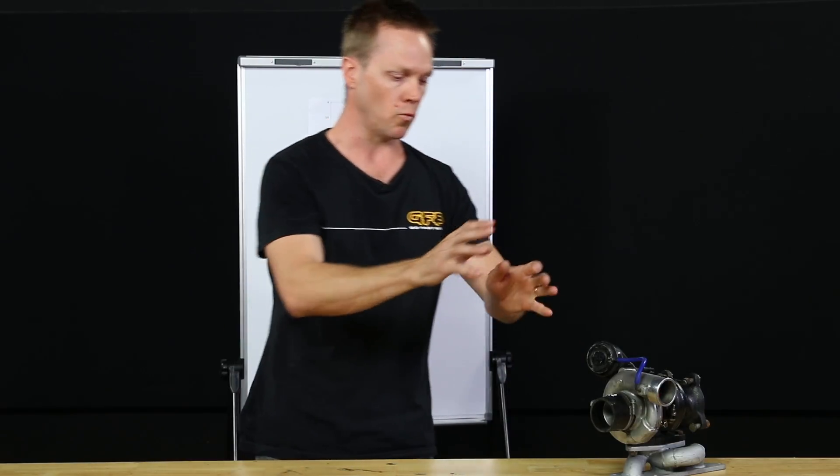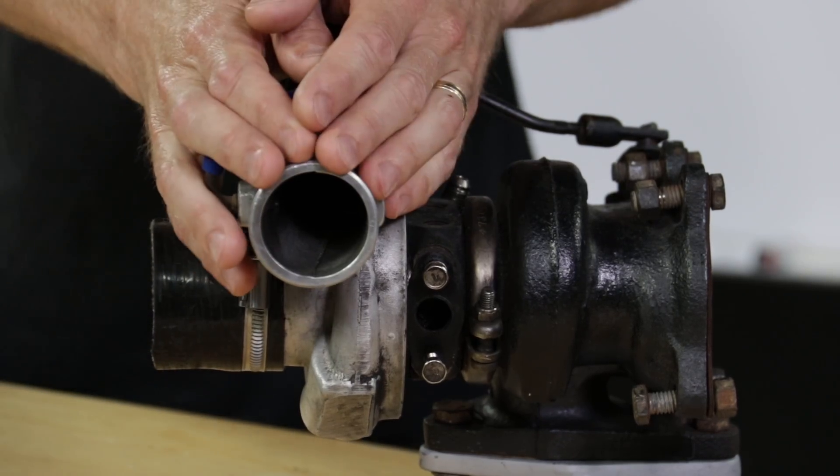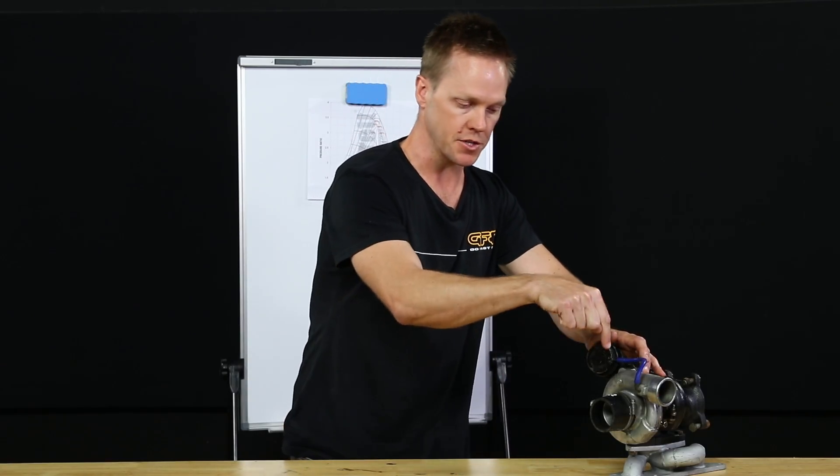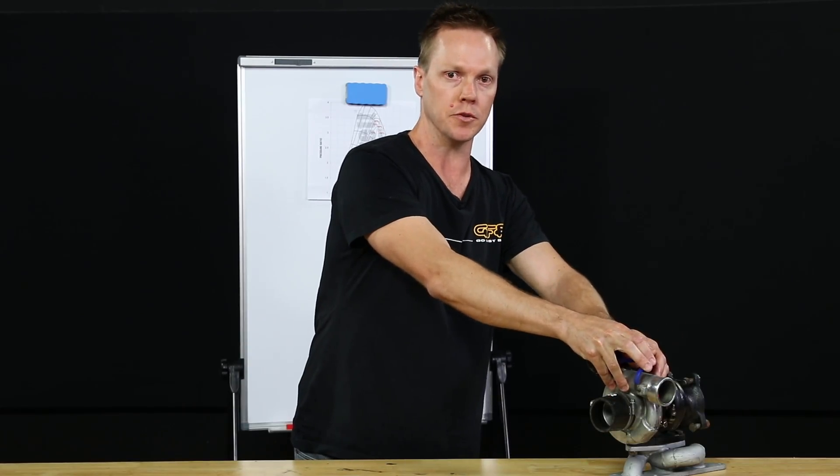So for example, let's say you had one bar of atmospheric pressure and you have one bar of boost pressure. That is a pressure ratio of two. However, if the pressure at the inlet drops and you still have one bar of boost, you've actually reduced your pressure ratio.